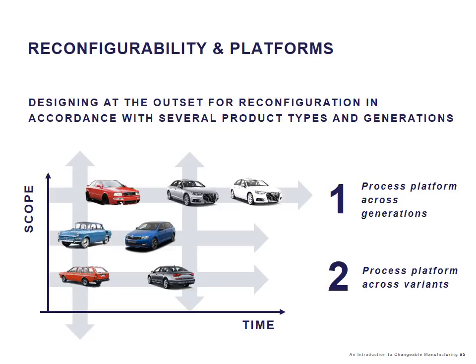The manufacturing systems or assembly lines that produce these cars are ideally reused across the different generations, but also across the different variants, in order not to make heavy investments in dedicated lines that become obsolete quite quickly. So over time, we reconfigure our line — for instance the assembly lines or production lines of some of the parts — for accommodating the requirements for each different new generation. We basically utilize a process platform across generations. That is reconfiguration over time.